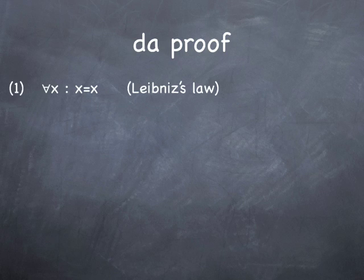Step one, we say for all x, x is equal to x. Now this is known as Leibniz's Law. And in English, this just means anything that exists is equal to itself. I'm equal to myself, you're equal to yourself. Anything that exists is just equal to itself.